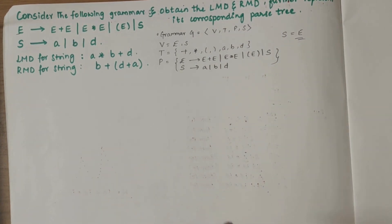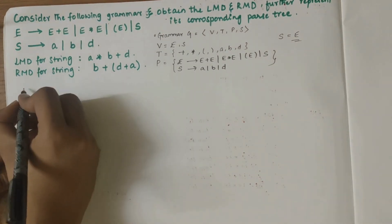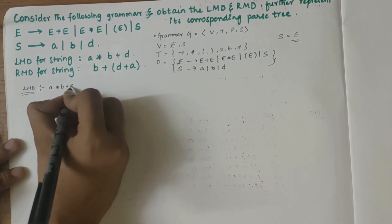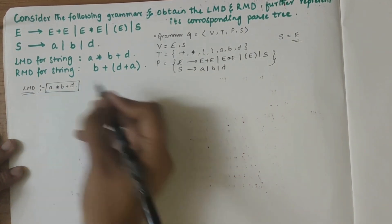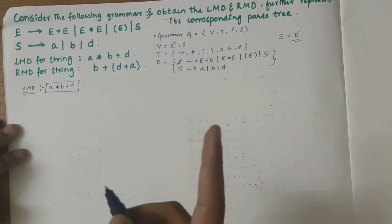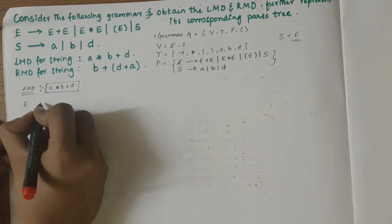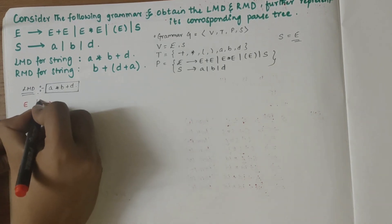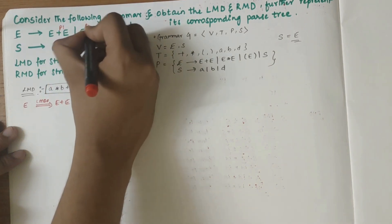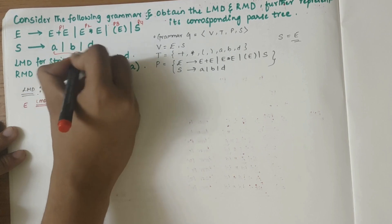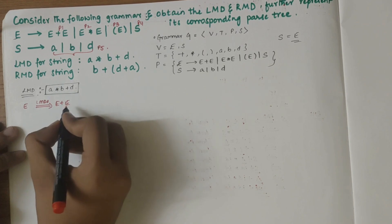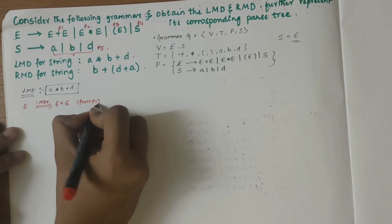We need to take the productions in the same order as given in the question. Now let's start the LMD part. For LMD we need to obtain the string A star B plus D. We start from the start symbol E. E derives — using LMD — E plus E. Let's label these as production one through production five.